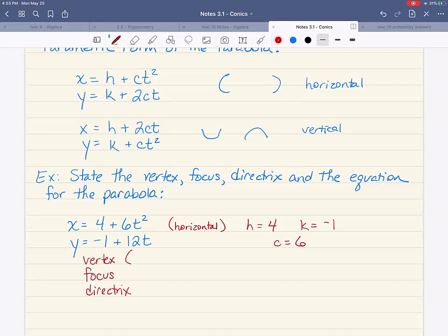Remember that the vertex is just h and k, so it's four negative one. What I taught you before was the fact that c tells you which way you need to go to find your focus.